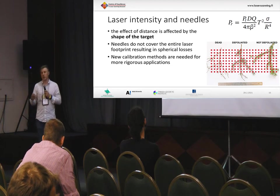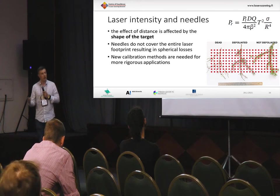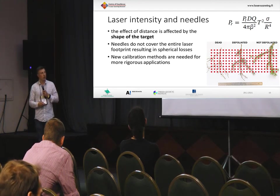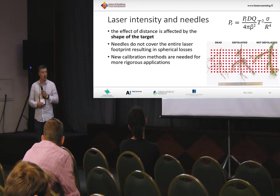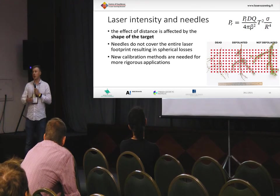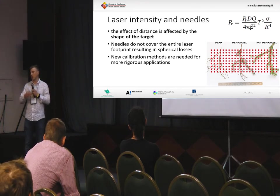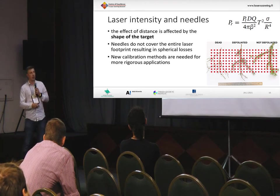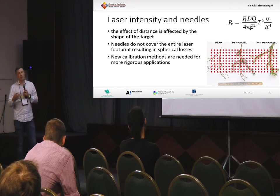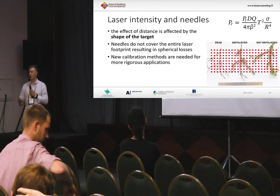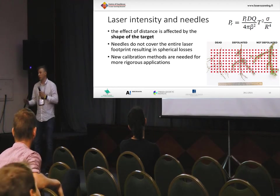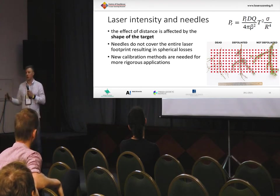Some words about using laser intensity with needles — this brings us to why the shape intensity metrics were so important. Laser intensity can be described with the radar equation, which tells us that the relationship between intensity and distance varies according to the target. When we have a target like needles that are not entirely covering the laser footprint, we get spherical losses that affect the intensity-distance relationship. So we need some kind of new calibration methods to account for this — maybe at least some kind of averaging is possible.